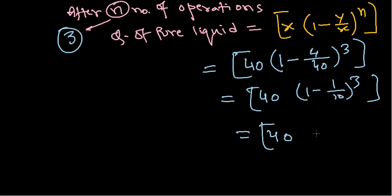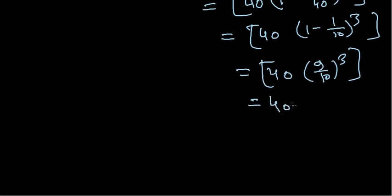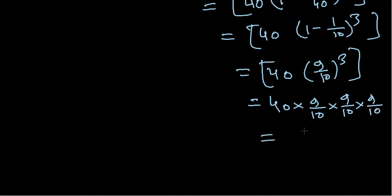So 1 minus 1 by 10 is 9 by 10. The expression becomes 40 multiplied by (9 by 10) cubed — that is, 9 by 10 multiplied three times. So we get 40 multiplied by 9/10 to the power 3, giving us a numerator of 9 × 9 × 9 × 40.